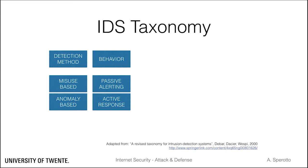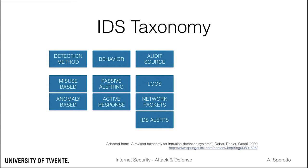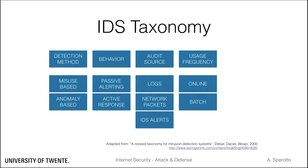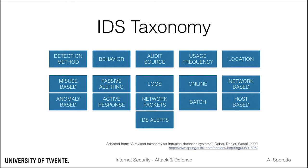Second, the behavior on detection, defined by what kind of action is taken after an attack is detected. Third, the audit source, namely which data the IDS is analyzing. Fourth, the usage frequency, which tells us when an IDS runs its analysis. Finally, the location of an IDS, being either network-based or host-based. We will dig deeper into these aspects in the remaining of this lecture.